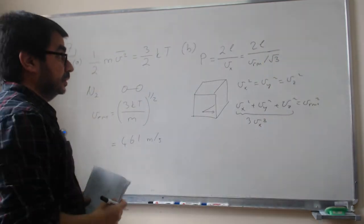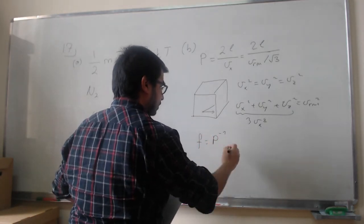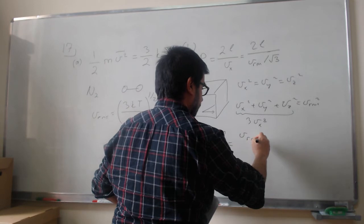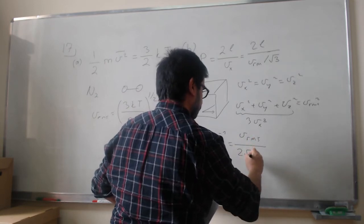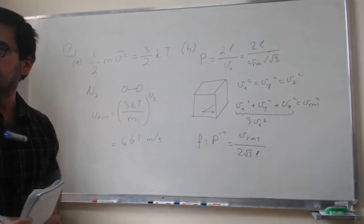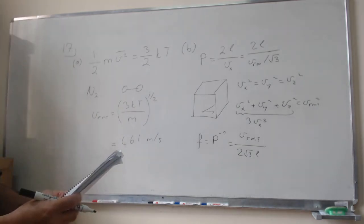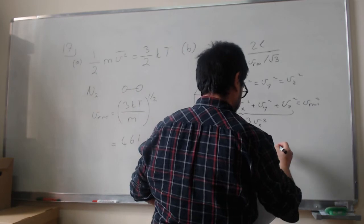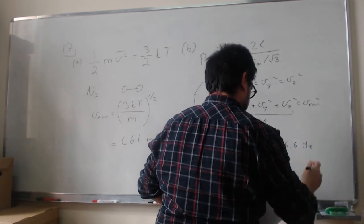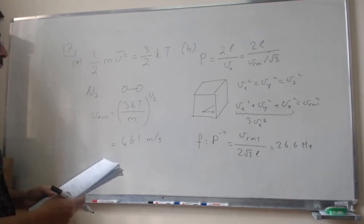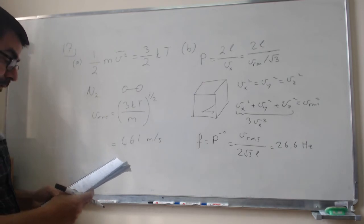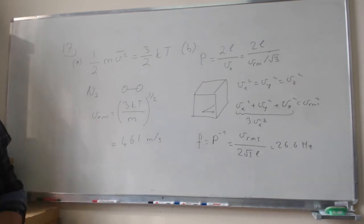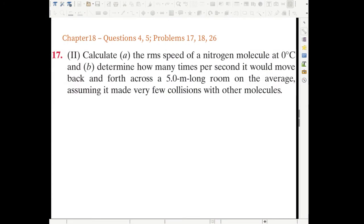And so this is going to be 2l divided by vrms divided by square root of 3. So this is the period. They are asking for the frequency. So frequency is just going to be the reciprocal of the period. So that's going to be vrms by 2 square root of 3 times l. And l is given. It is 5 meters. And you just need to plug the numbers in. And I think I did this as well. And what you get is 26.6. Suppose that this is in Hertz. So every second, 26.6 times the molecule is going to hit one of the walls. So as you see, this is a quite straightforward application of one of the basic results of kinetic theory. And this is actually sort of a warm-up for the next problem.